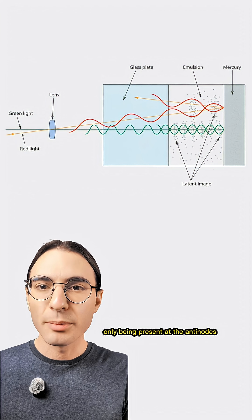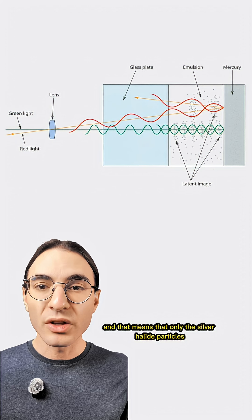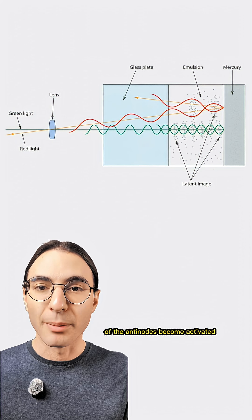So in the film, we can think of the light only being present at the antinodes, and not being present at the nodes. And that means that only the silver halide particles at the antinodes become activated.